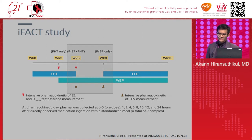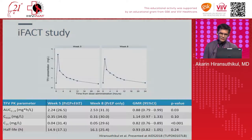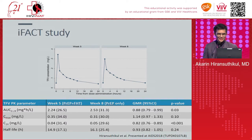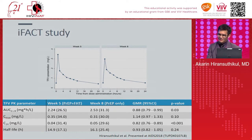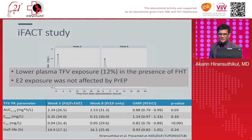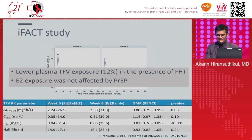The second analysis, week 5 versus week 8, examined whether feminizing hormone therapy affects PrEP. We found that hormones decrease tenofovir levels. Specifically, in the presence of feminizing hormone therapy, plasma tenofovir AUC was reduced by 12% and C24 was reduced by 18% — both statistically significant. Conclusion: lower plasma tenofovir exposure and concentration in the presence of feminizing hormone therapy; estrogen was not significantly affected by PrEP — that's the good news.